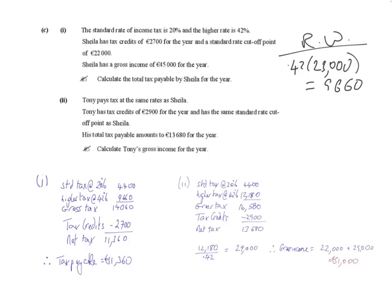So part two tells us that Tony pays tax at the same rates as Sheila and he has tax credits of €2,900 for the year and has the same standard rate cutoff point as Sheila. His total tax payable amounts to €13,680 for the year. Calculate Tony's gross income for the year.